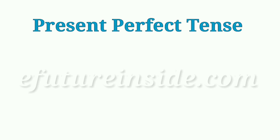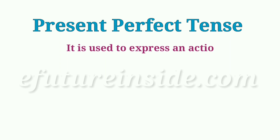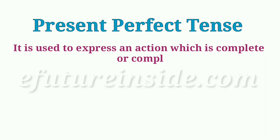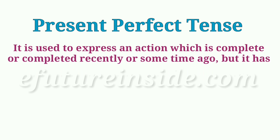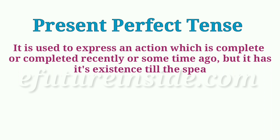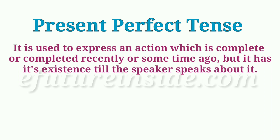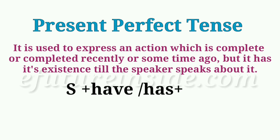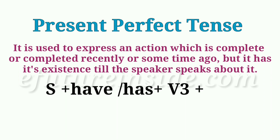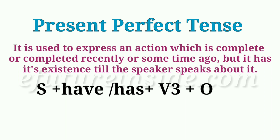Present perfect tense is used to express an action which is complete or completed recently, or some time ago, but it has its existence till the speaker speaks about it. And the structure is: subject plus have or has plus third form of the verb plus object.